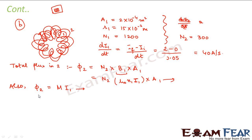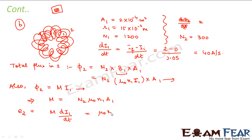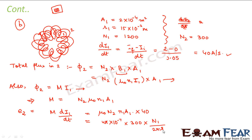From φ₂ = MI₁, we can write that M = N₂ × μ₀ × n₁ × A₁, by equating the right-hand sides. This is the value of mutual inductance M. Therefore the EMF induced in the second coil equals M × dI₁/dt, which can be written as μ₀ × N₂ × n₁ × A₁ × dI₁/dt, where dI₁/dt = 40 amperes per second, n₁ = N₁ / (2πr₁), and A₁ = 2 × 10⁻⁴.